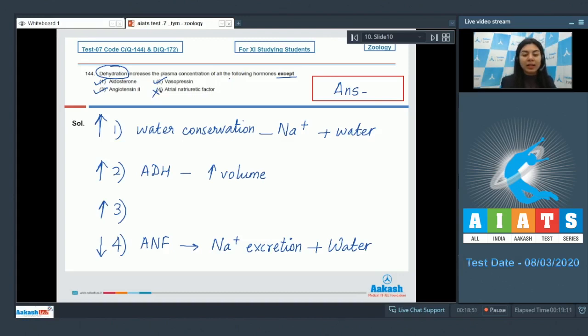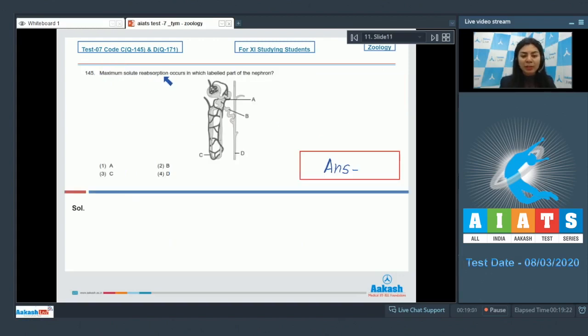Question 145: Maximum solute reabsorption occurs in which labeled part of the nephron? A, B, C, and D.